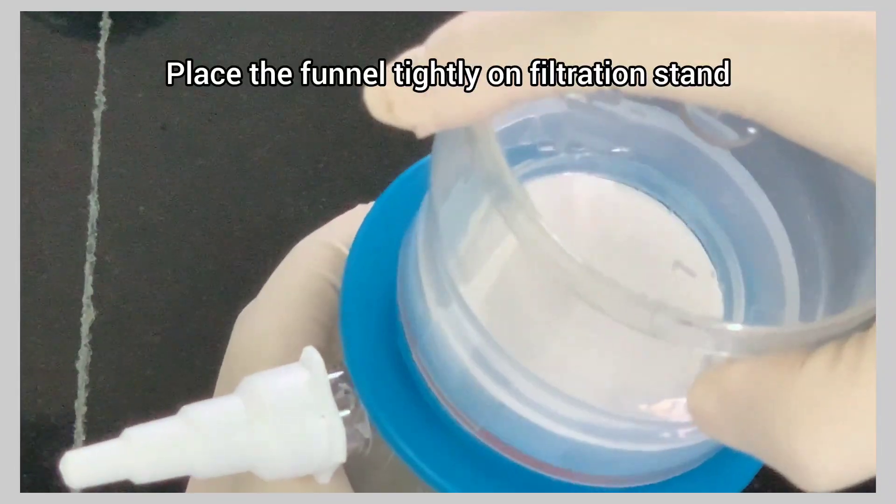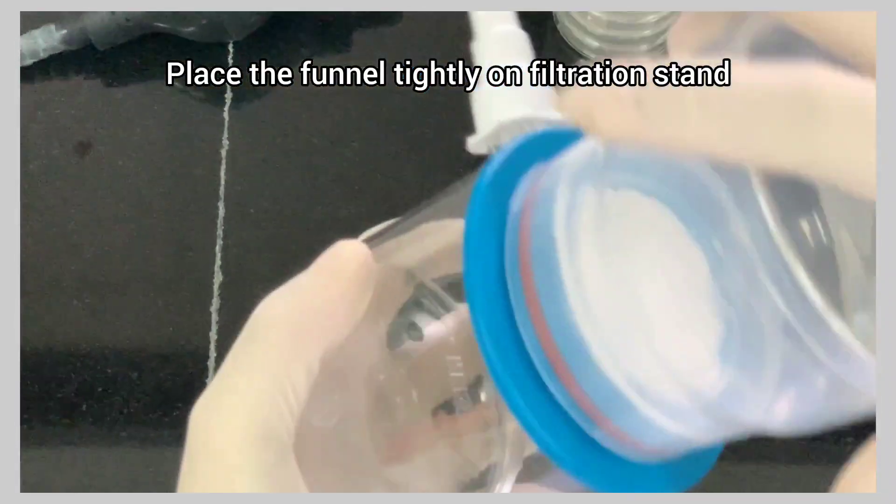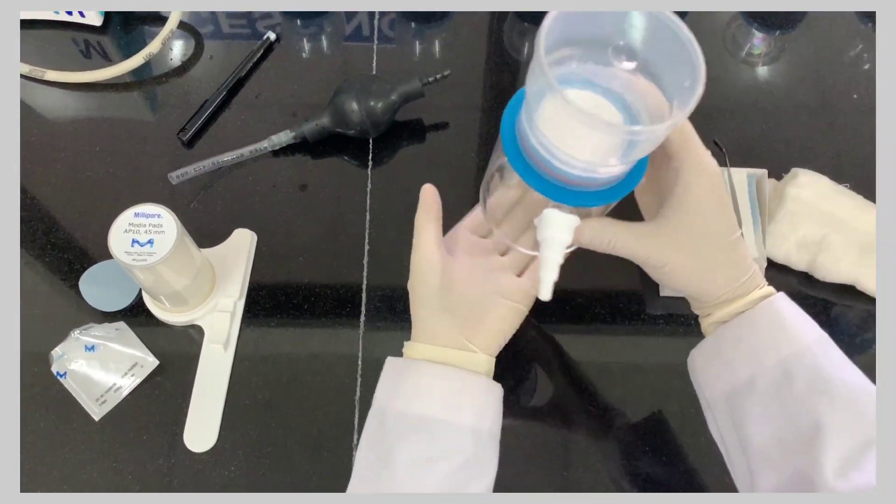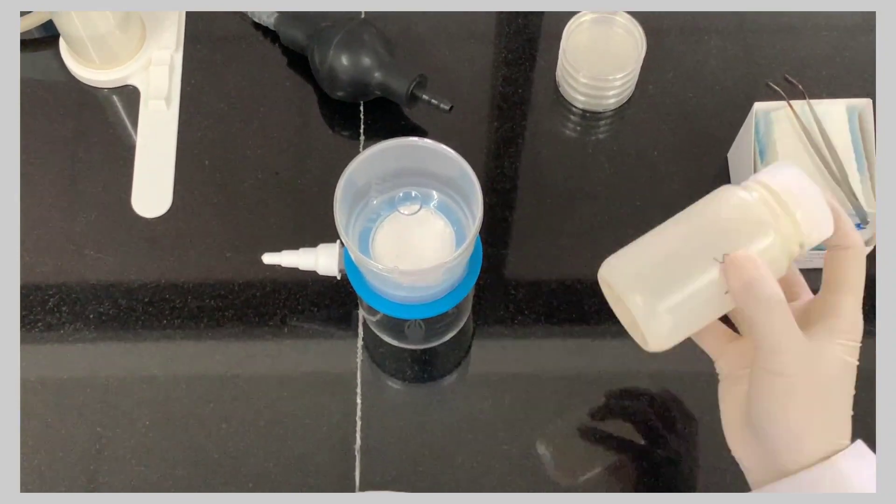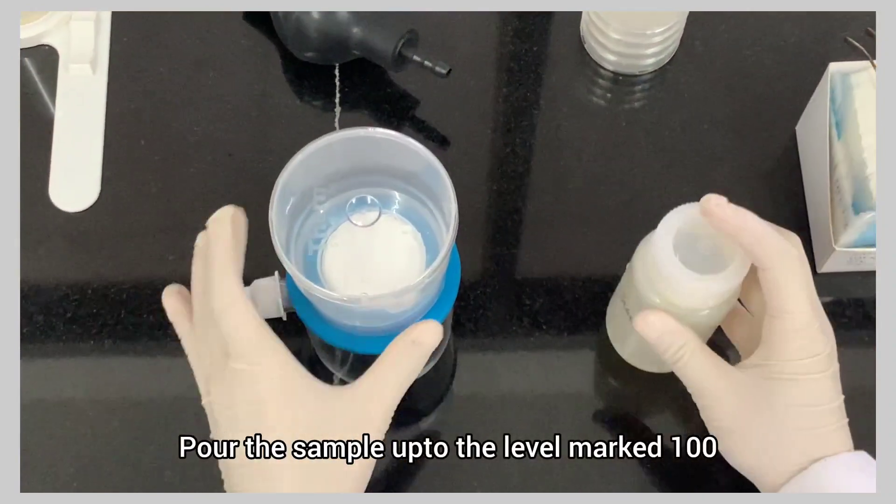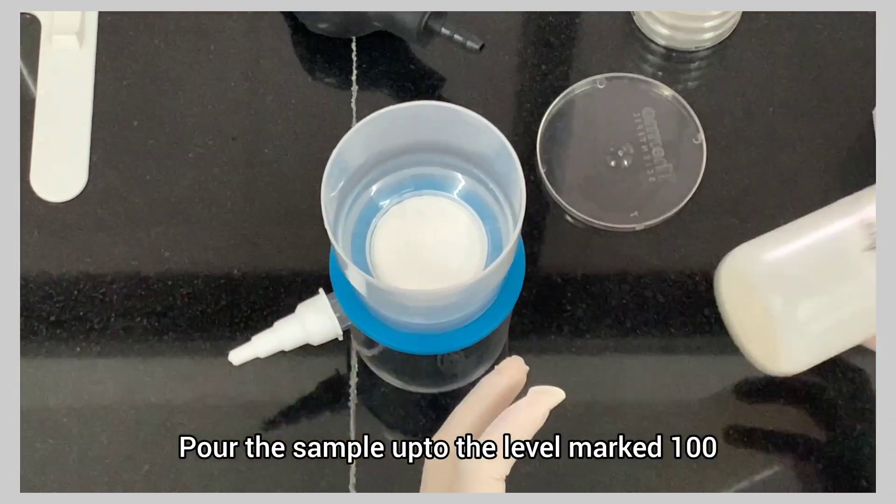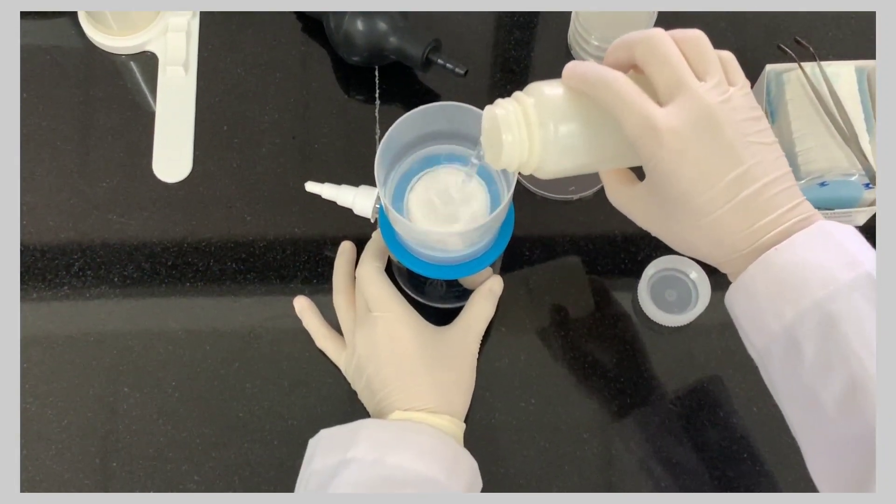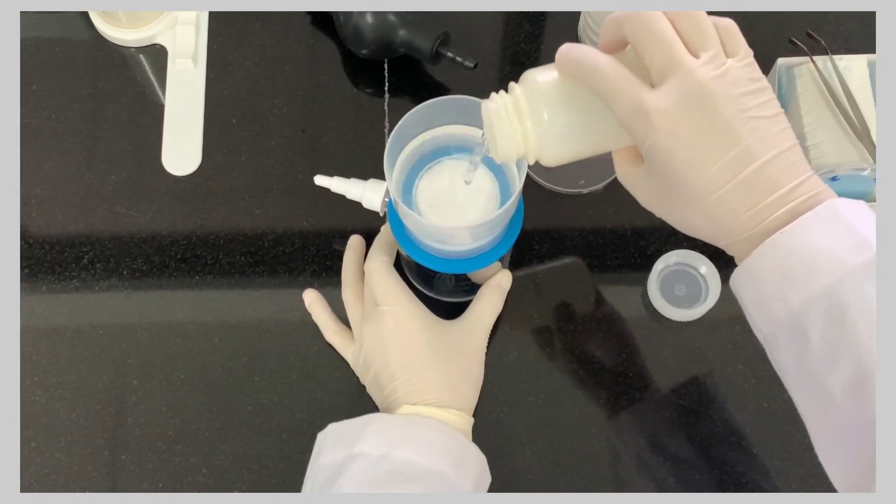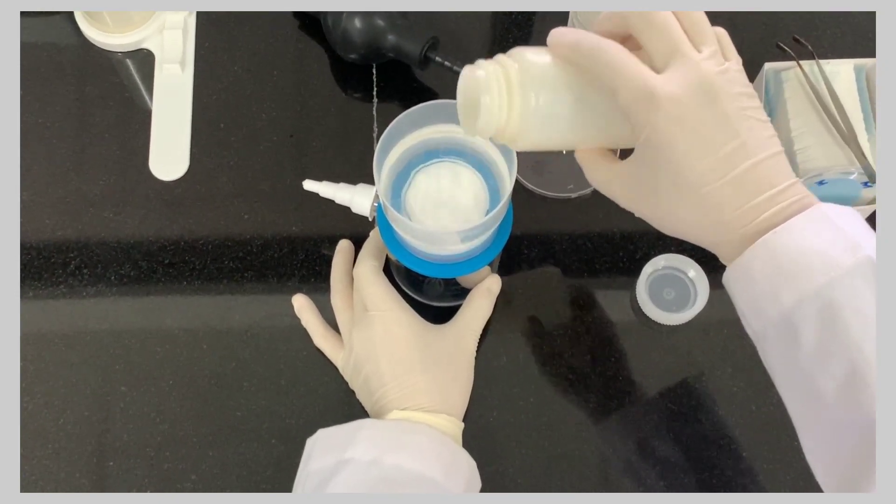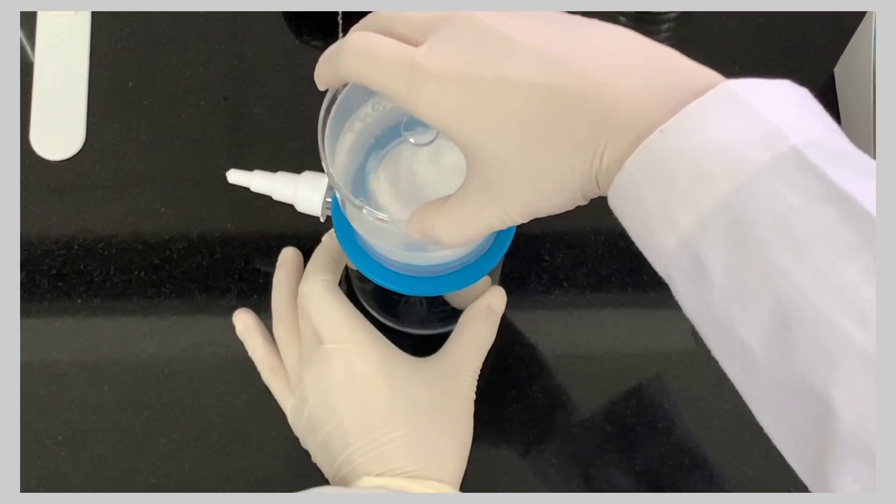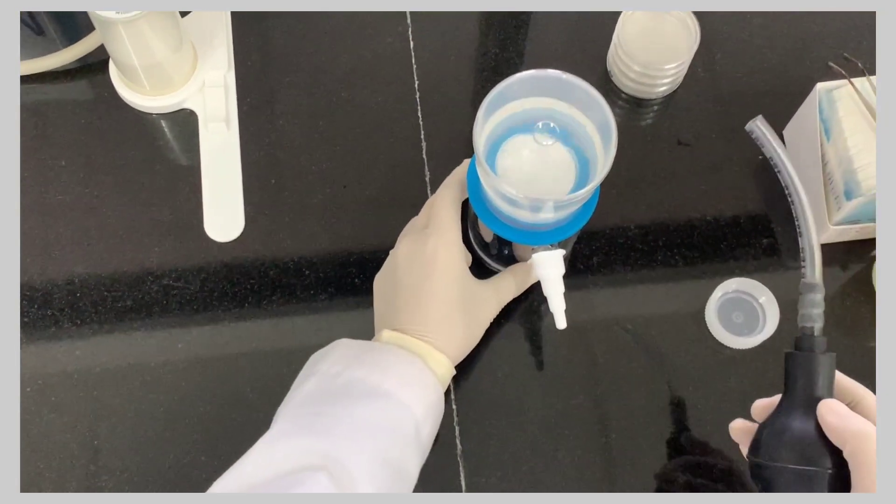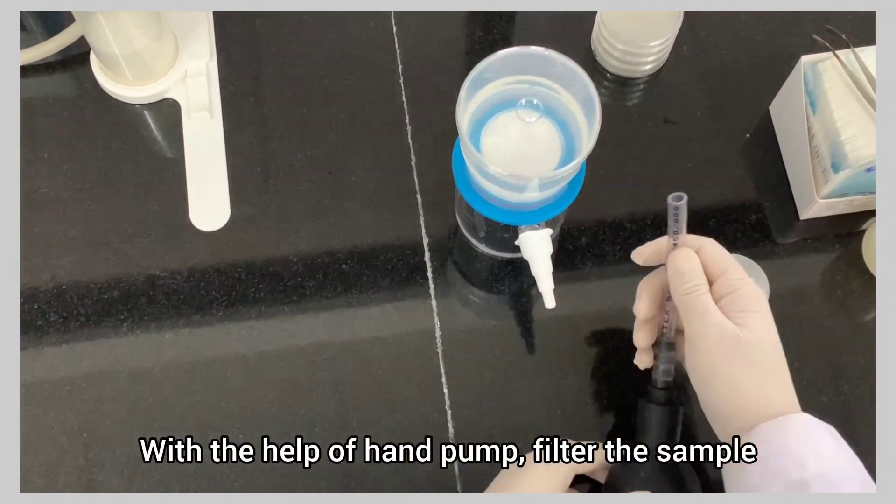Place the funnel tightly on filtration stand. Pour the sample up to the level marked 100. With the help of hand pump, filter the sample.